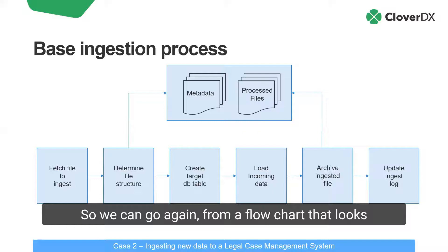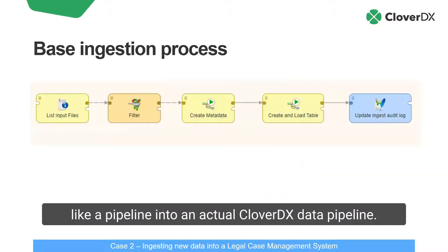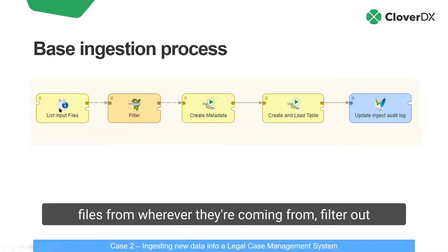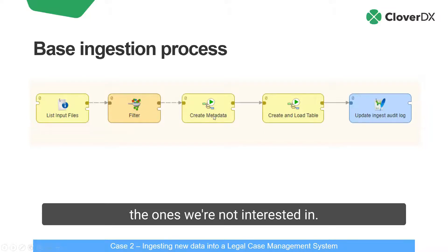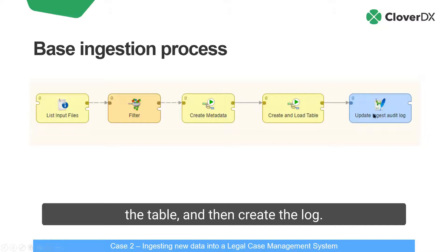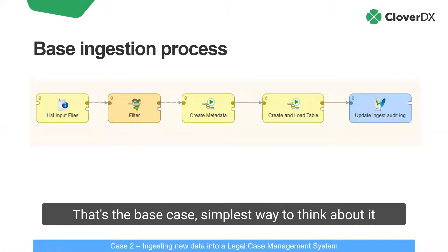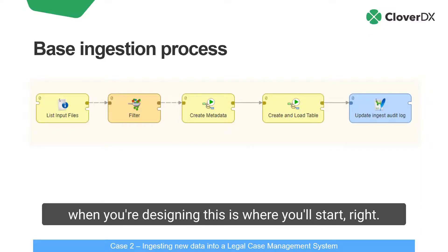So we can go from a flowchart that looks like a pipeline into an actual CloverDX data pipeline. You can see the same steps: list the files from wherever they're coming from, filter out the ones we're not interested in, try to create the metadata, create and load the table, and then create the log. The log here is an Excel sheet. This is a CloverDX data pipeline as built in our design tool. That's the base case — the simplest way to think about it, and when you're designing, this is where you'll start.